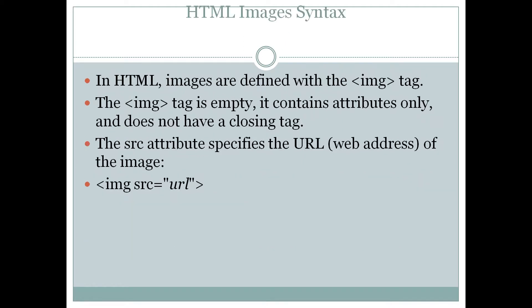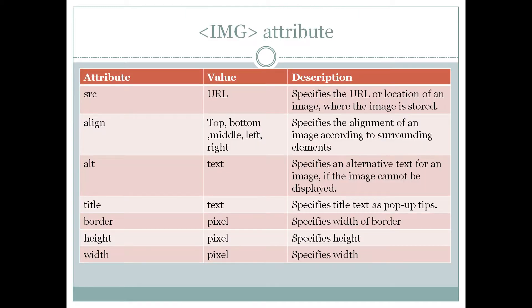Now let's look at HTML image syntax. Images are defined using the img tag in angle brackets. The img tag is an empty tag with no closing tag. The most important attribute is src — source — which is set equal to the URL of the image. Other attributes include src, align, alt, title, border, height, and width.